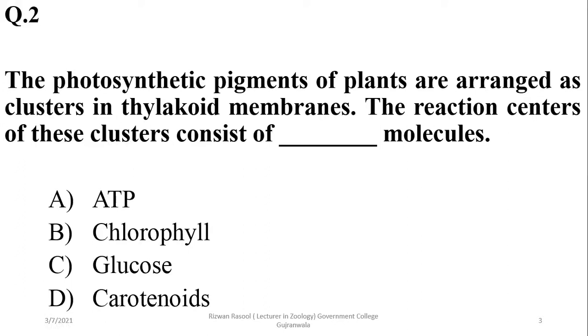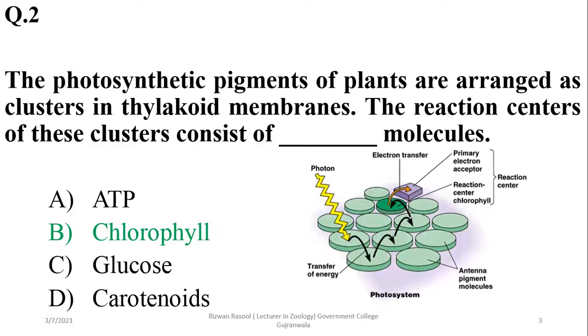Question number two: the photosynthetic pigments of plants are arranged as clusters in the thylakoid membrane. The reaction center of these clusters consists of chlorophyll molecules, and that is chlorophyll a, which is the main part of the reaction center.